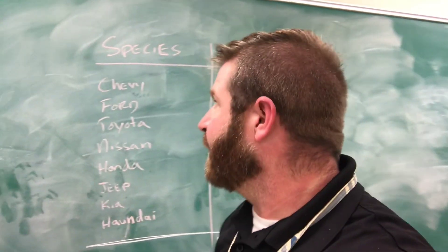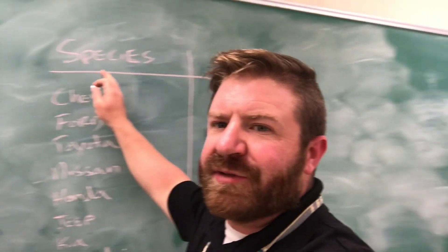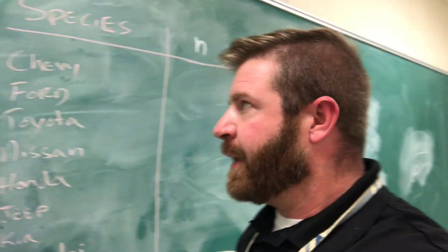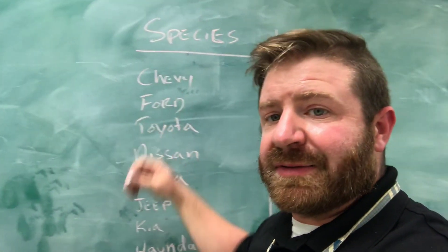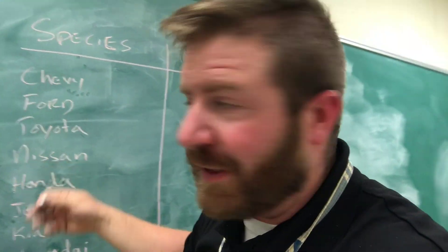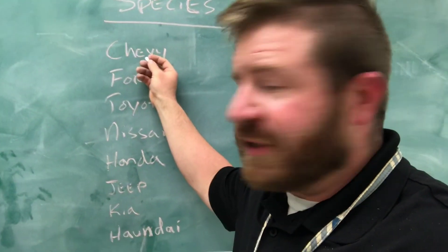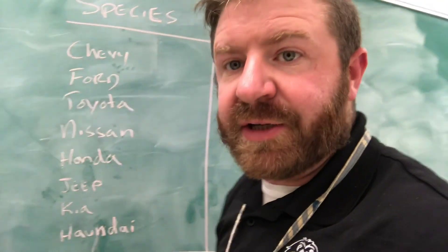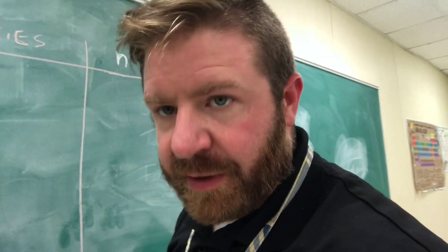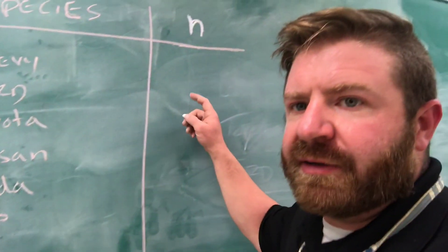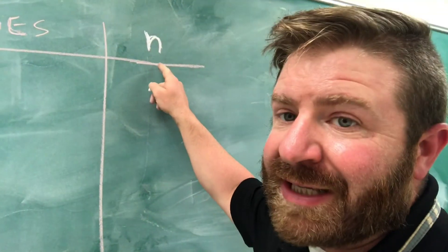Here's what your data sheet is going to look like. You've got a T-chart — you need a lot of space on one side and not very much on the other. On the wide side, list your species. In this case, my fictitious species are car manufacturers: Chevrolet, Ford, Toyota, Nissan, Honda, Jeep, Kia, and Hyundai. On the slim side of the T-chart, you have lowercase n.